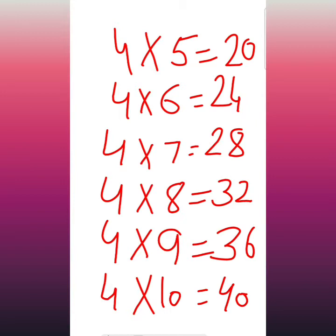Beta, we will revise again. 4 0's are 0. 4 1's are 4. 4 2's are 8. 4 3's are 12. 4 4's are 16. 4 5's are 20. 4 6's are 24. 4 7's are 28. 4 8's are 32. 4 9's are 36. 4 10's are 40. Next beta, table of 5.